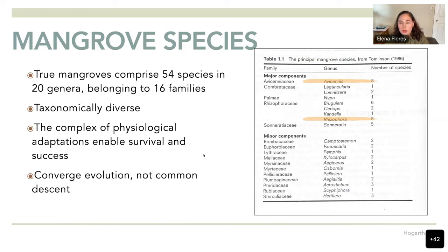The two main genera are Avicennia and Rhizophora — Rhizophora is best known as the red mangroves and Avicennia as the black mangroves.